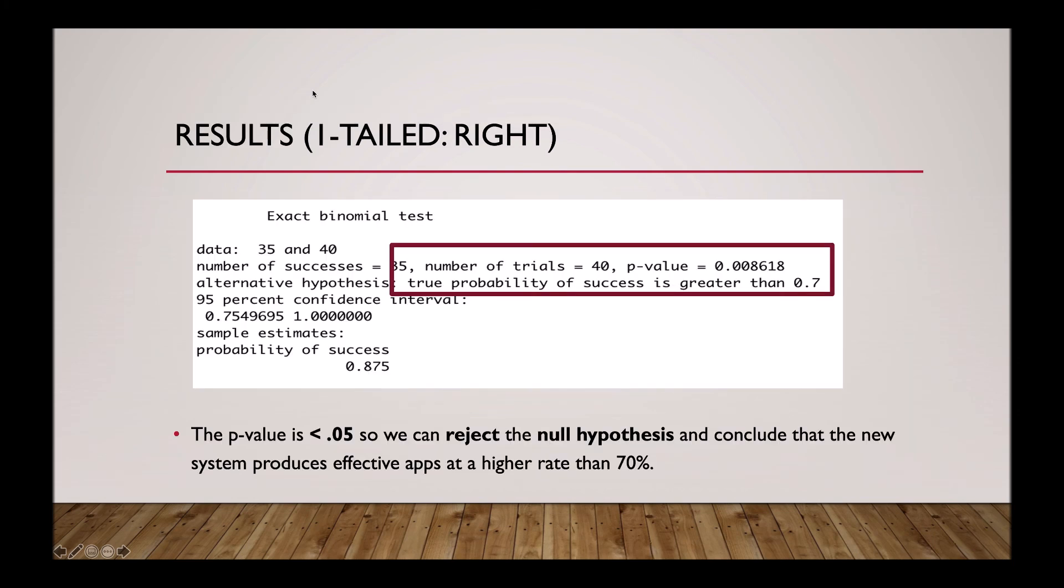And here are the results. As you can see, the p-value is less than 0.05, so we can reject the null hypothesis and conclude that the new system produces effective apps at a higher rate than 70%.